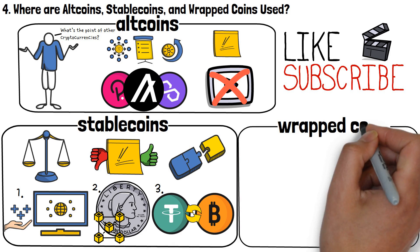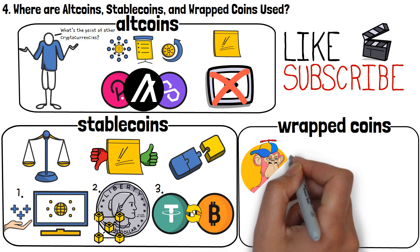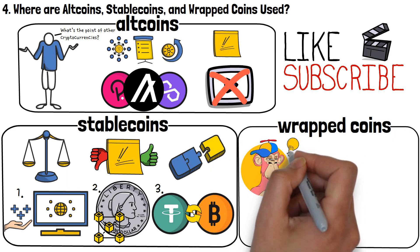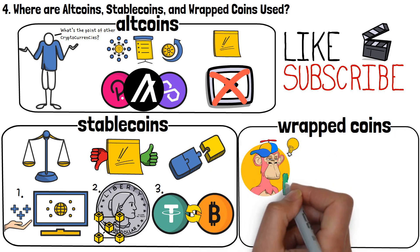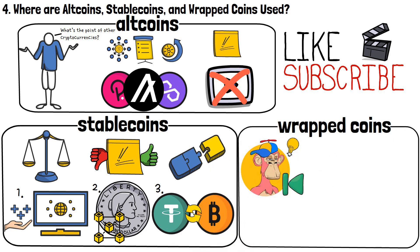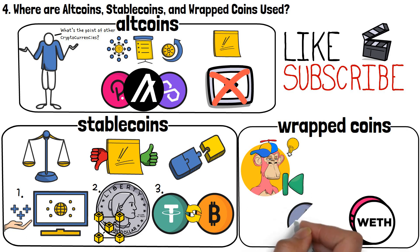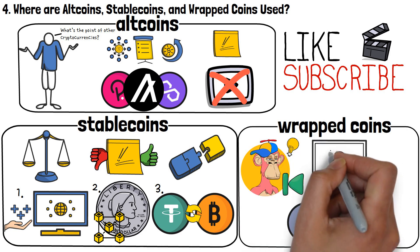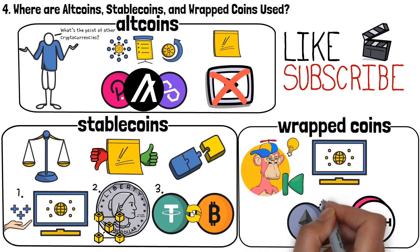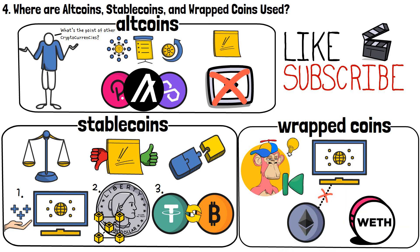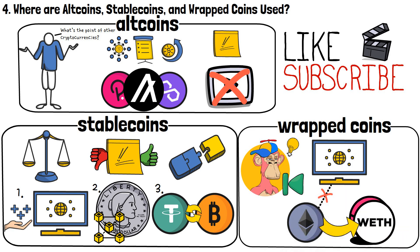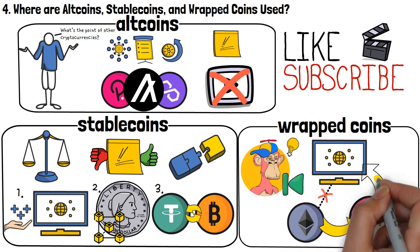Now, as far as wrapped coins are concerned, I've kind of hinted towards their use case already earlier in the video. These peculiar cryptocurrencies are used when you want to transact or store a specific crypto on a network or wallet that does not support that crypto. Thus, you wrap your coins in a way that is supported by the network, and then are able to transact with it there.